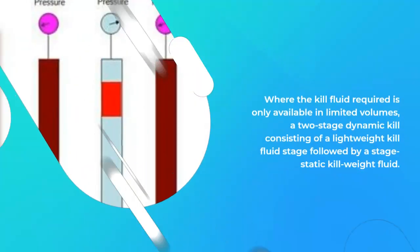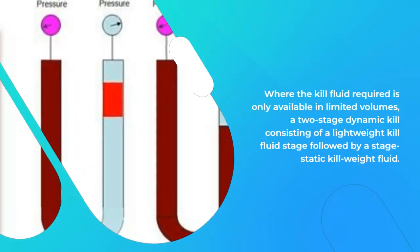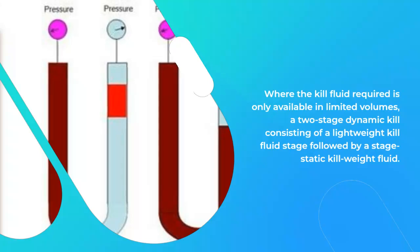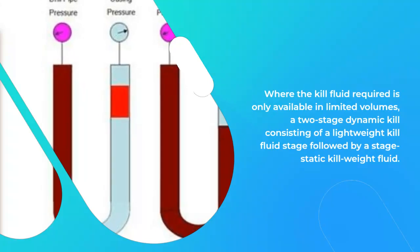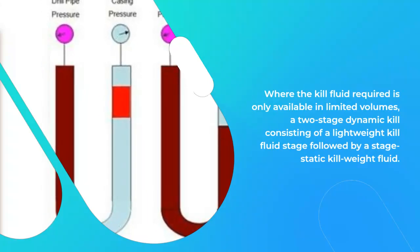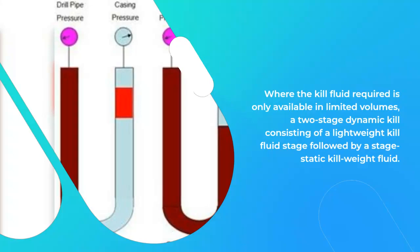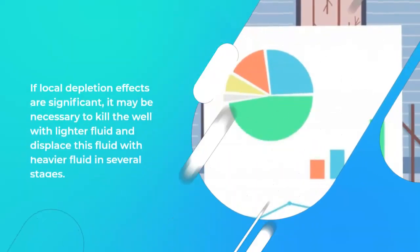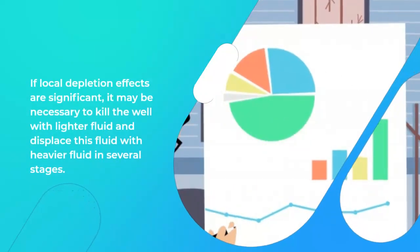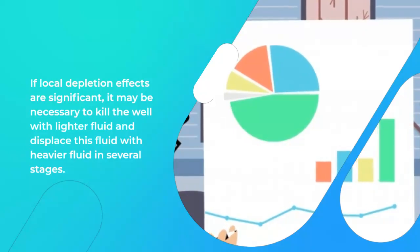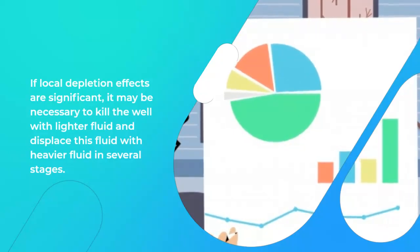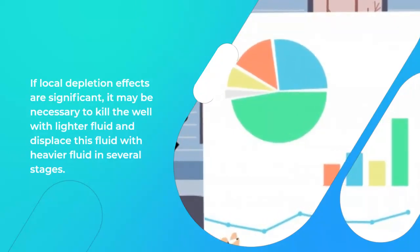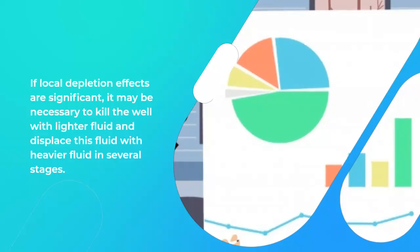Where the kill fluid required is only available in limited volumes, a two-stage dynamic kill consisting of a lightweight kill fluid stage followed by a static kill weight fluid stage may be used. If local depletion effects are significant, it may be necessary to kill the well with lighter fluid and displace this fluid with heavier fluid in several stages.